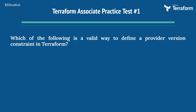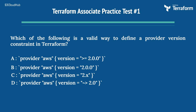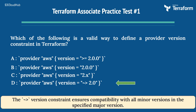The first question is: which of the following is a valid way to define a provider version constraint in Terraform? Option A: provider AWS version equals equals 2.0.0. Option B: provider AWS version equals 2.0.0. Option C: provider AWS version equals 2.x. Option D: provider AWS version equals tilde 2.0. The right answer is Option D: provider AWS version equals tilde 2.0. The tilde version constraint ensures compatibility with all minor versions in the specified major version.